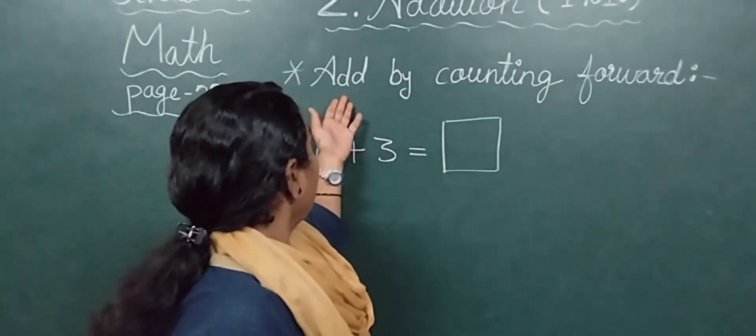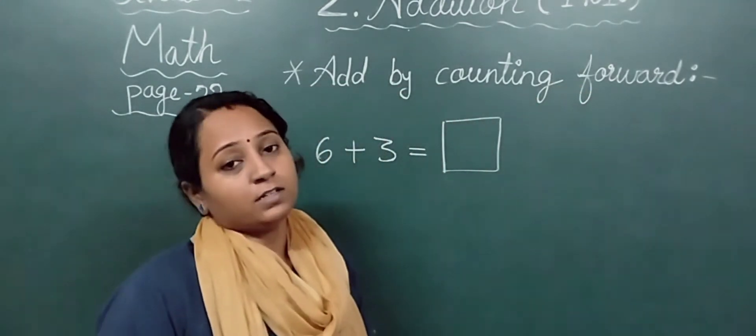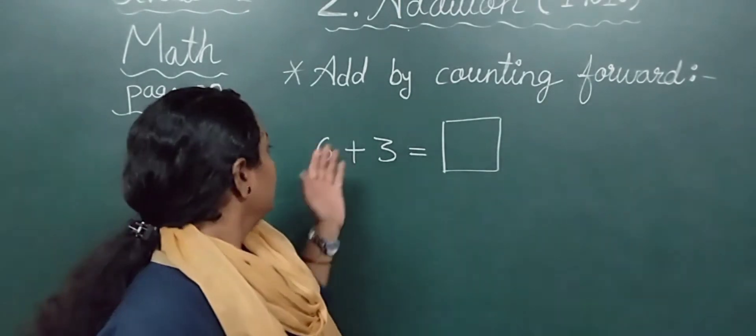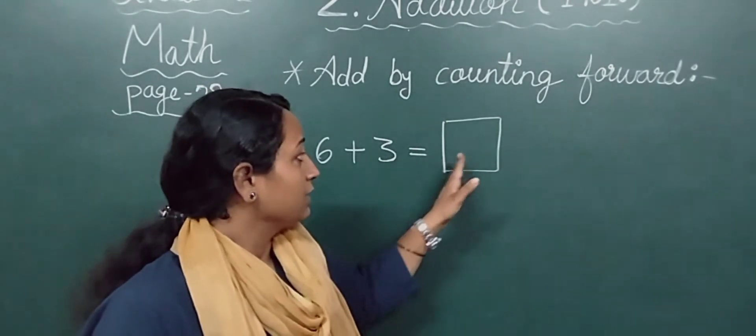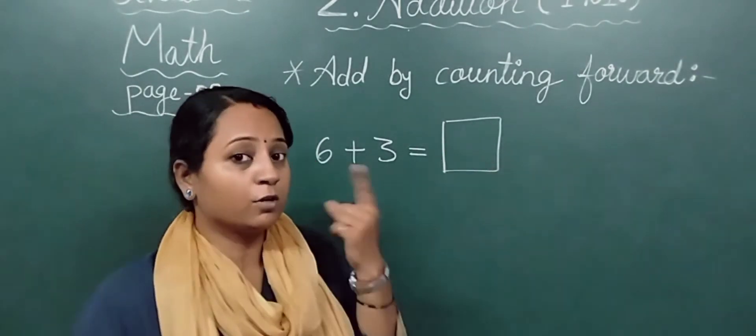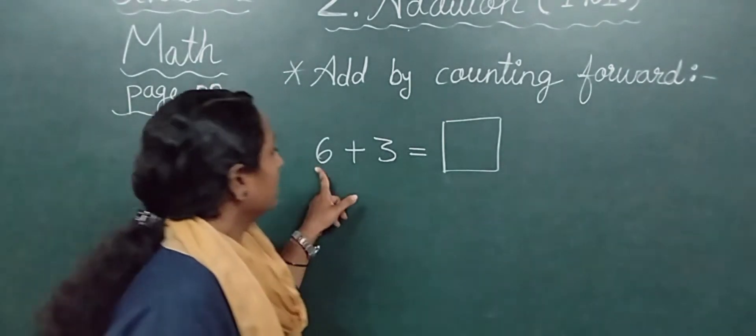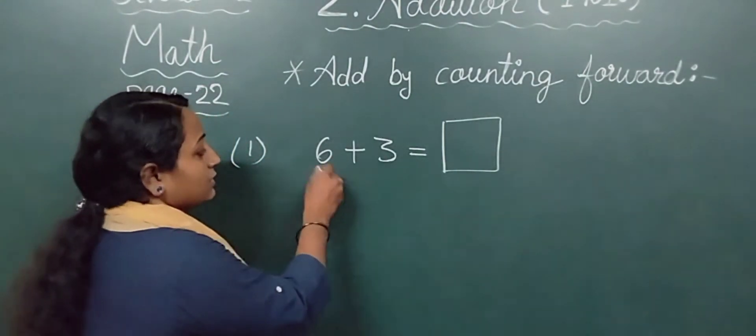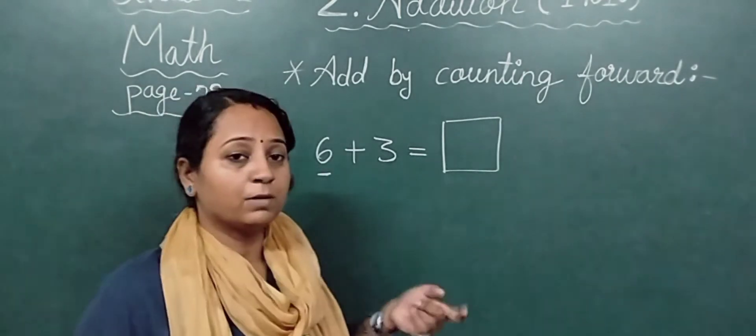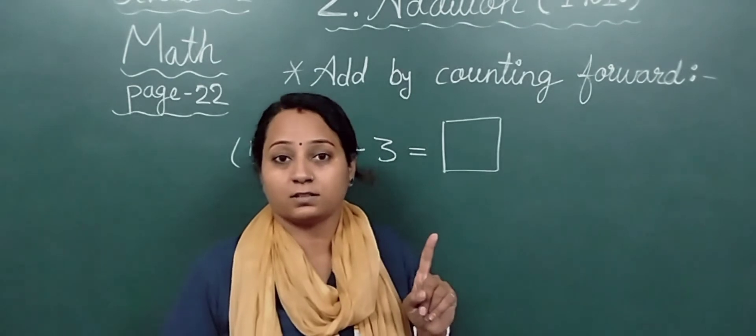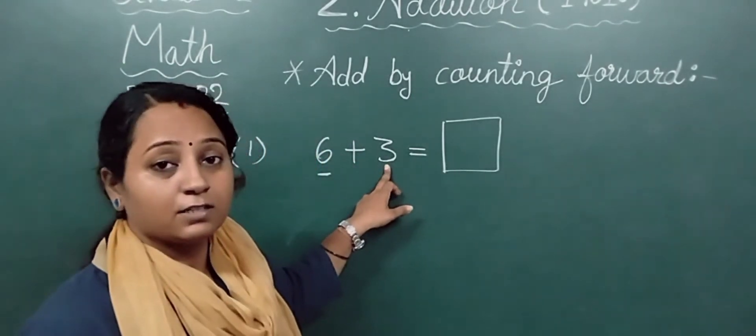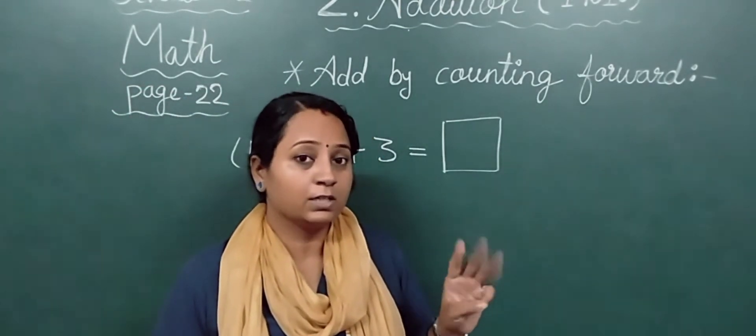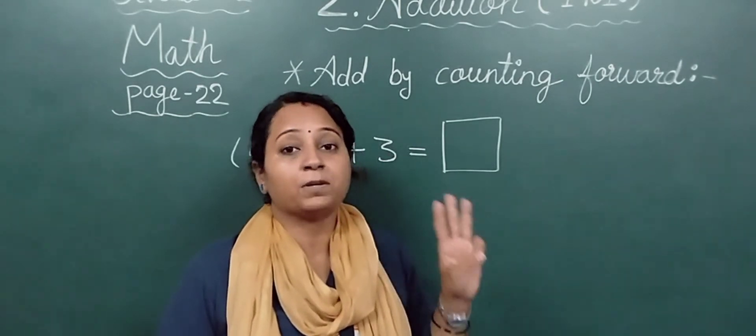Now our next topic: Add by counting forward. Now what do you have to do? You have to do forward counting. How to do it? I will tell you. 6 plus 3. What is the answer after adding? We have to do forward counting. First, you have to find the big number. Between these two, which is the big number? 6. 6 is the bigger number. So we will keep 6 in our mind. You have to keep 6 in your mind.